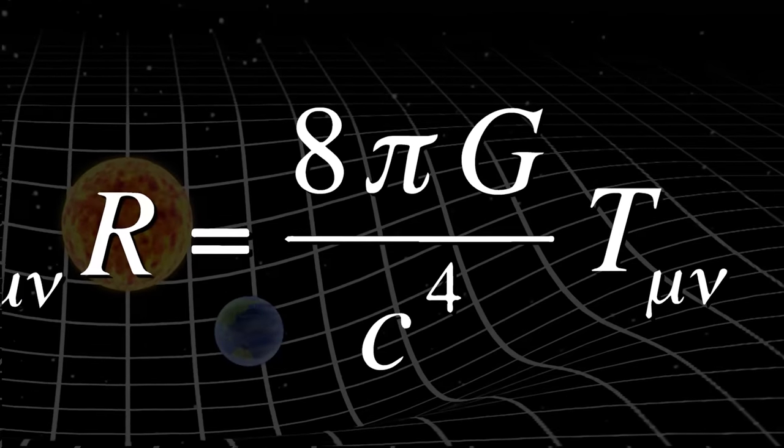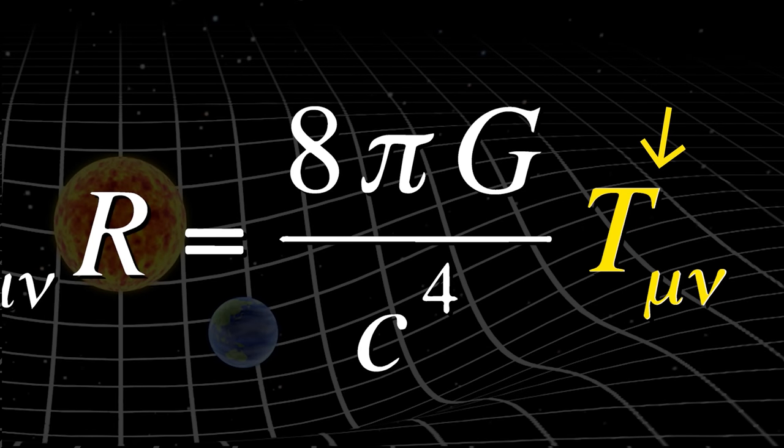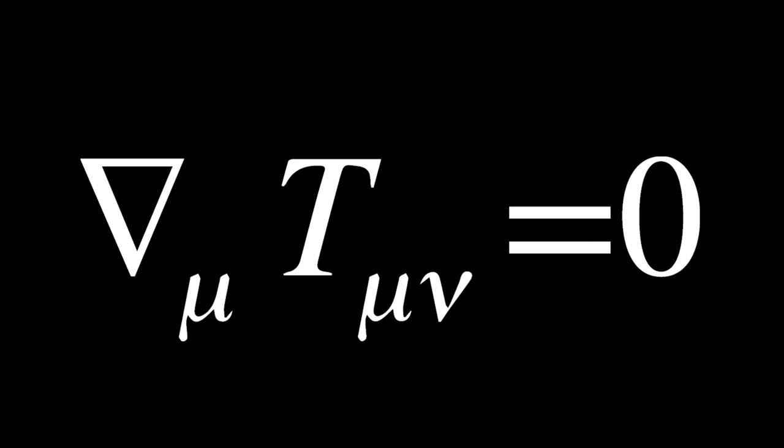The matter and energy is contained in this term on the right side of the equation, T sub mu nu. This is known as the stress energy tensor, also called the energy momentum tensor. We need to take a closer look at this because this is where energy is defined in general relativity. And general relativity reveals that the derivative of the energy momentum tensor is zero.